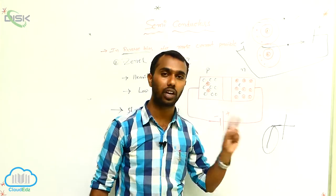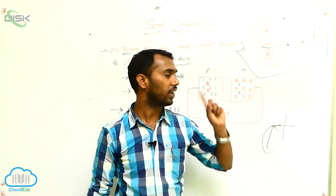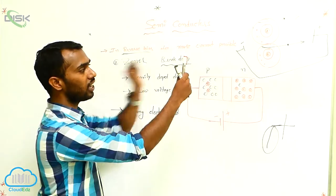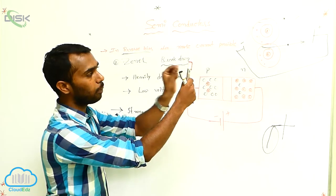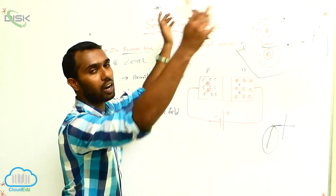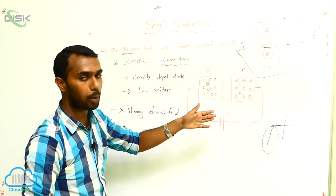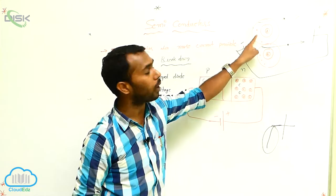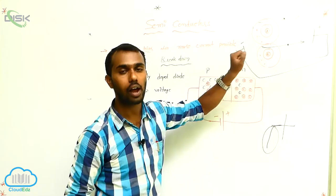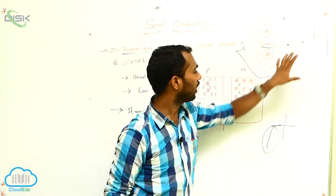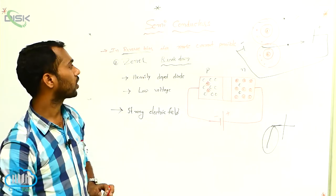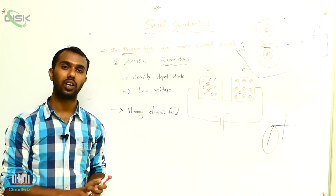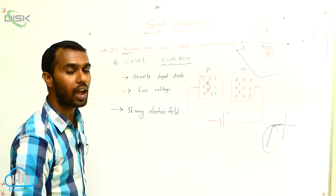We can explain this concept using two breakdowns. In avalanche breakdown, one electron hits the atom and in this hitting process the number of electrons increases. In Zener breakdown, the strong electric field attracts electrons from the atoms, so the number of electrons increases and current is more. This is about avalanche breakdown and Zener breakdown.